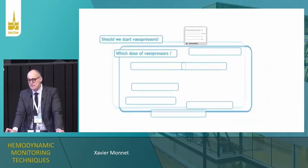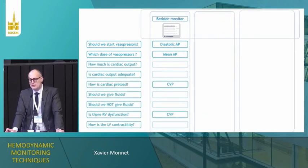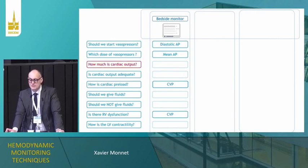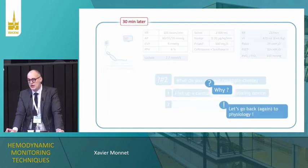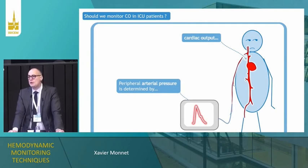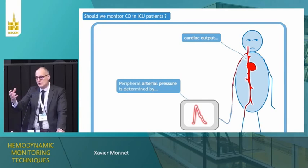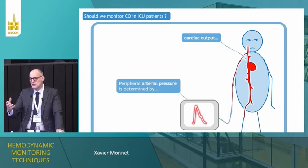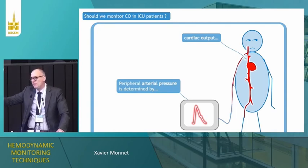Nevertheless, we likely need more than that, because one of the questions that will arise in this patient is cardiac output. The main question is: should we monitor cardiac output in this patient? Because if we do not monitor cardiac output, one will only look at the bedside monitor. For instance, if you give fluid to this patient, you will change cardiac output — basically fluids are aimed at changing cardiac output. When you give a fluid bolus, what do you look at to know whether it was efficient or not?